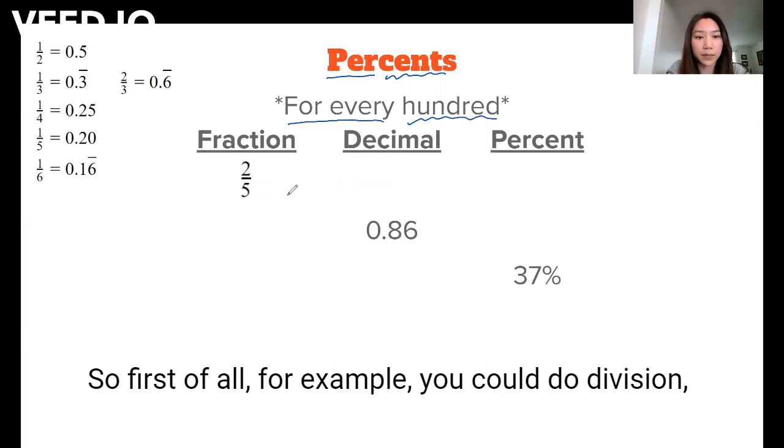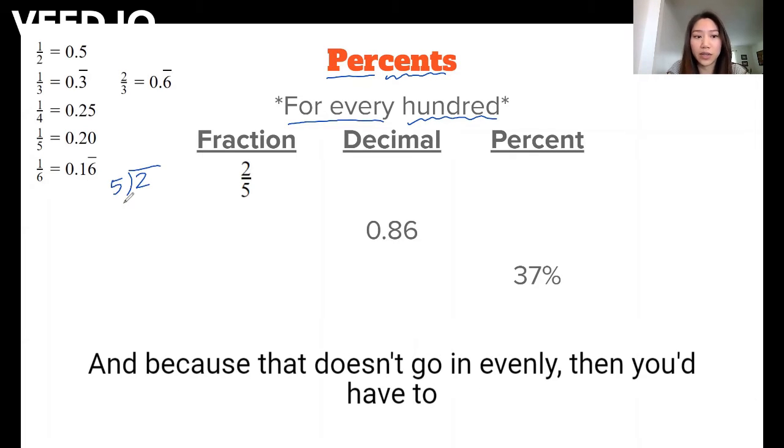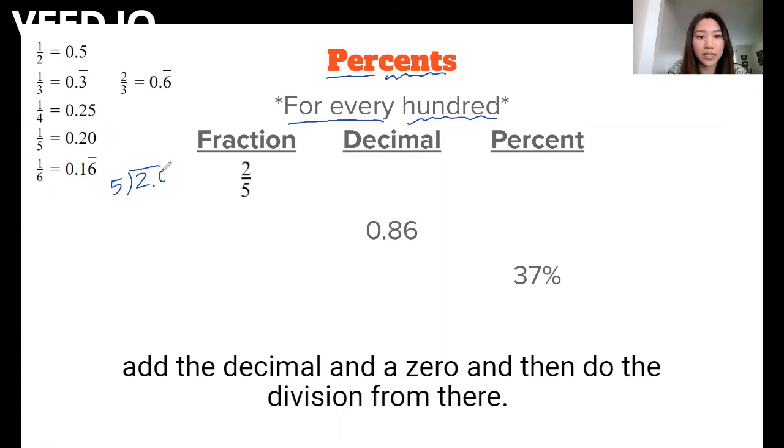So first of all, you could do division. So two divided by five. And because that doesn't go in evenly, then you'd have to add the decimal and a zero and then do the division from there.